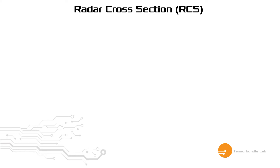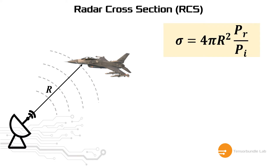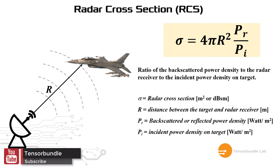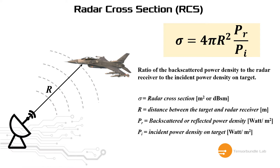The definition of RCS is dependent on several factors. If we have a target located from the radar at a distance of R, then we can express the RCS of the target by using this equation. RCS is primarily measured in terms of squared meters, or in more conventional units, which is known as dB squared meter. It is basically the ratio of the backscattered power density to the incident power density on the target. Backscattered power means the reflected power from the target to the radar receiver antenna.